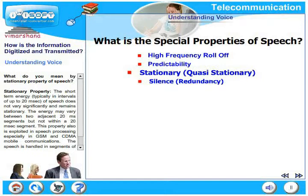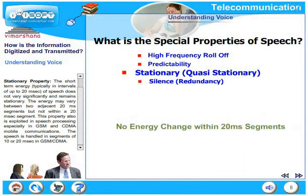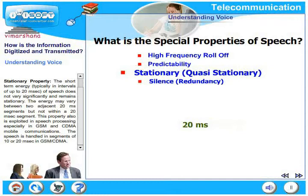Let us look at the next property — the stationary property of speech. The short-term energy of speech does not vary significantly and remains stationary. Short-term is typically up to a 20 milliseconds interval, 10 to 20 milliseconds. The energy may vary between two adjacent 20 millisecond segments, but not within a 20 millisecond segment. This property is exploited extensively in speech processing, especially in GSM and CDMA communications, where speech is always handled in segments of 10 or 20 milliseconds.